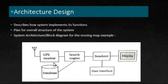Architecture Design describes how a system implements its functions. In the Specification phase, we only know what functions an embedded system should do — it does not give any idea about how it is implemented. To know how it is implemented, we have included an Architecture Design phase. It can be defined as a plan for the overall structure of the system.